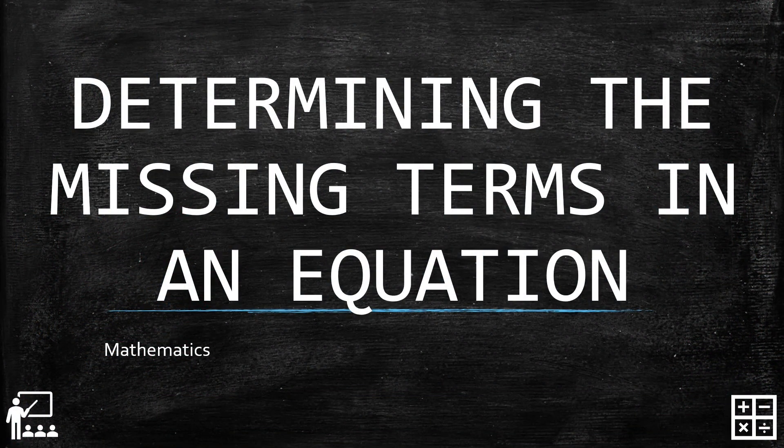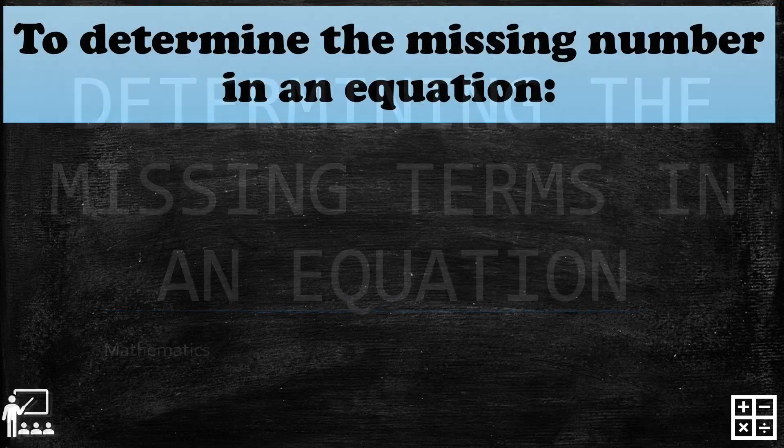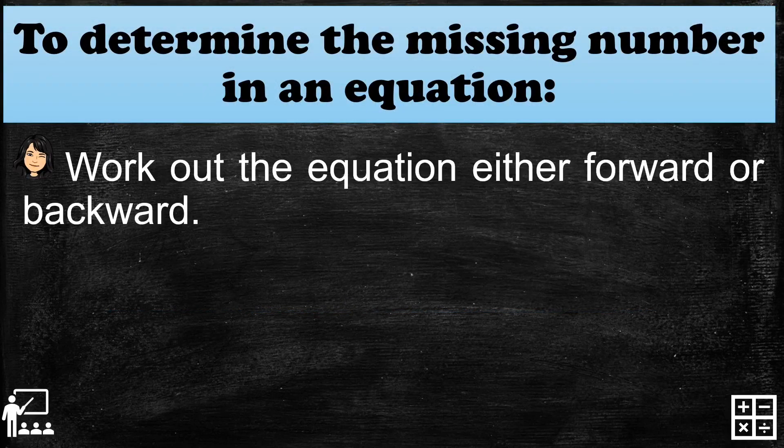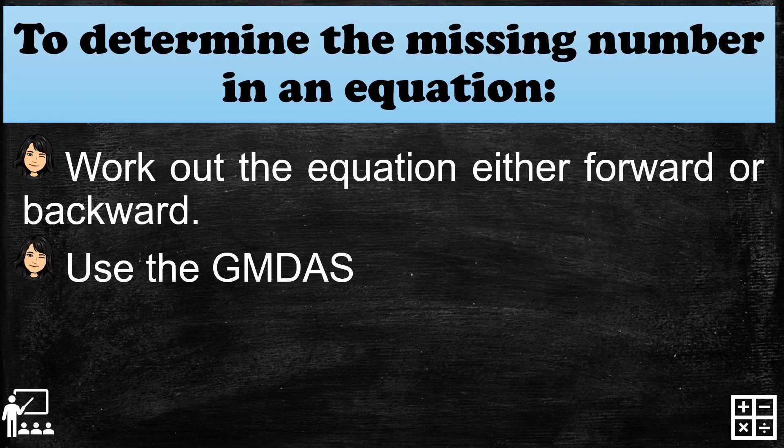This video lesson is about determining the missing terms in an equation. To determine the missing number in an equation, first work out the equation either forward or backward.